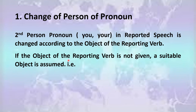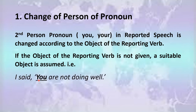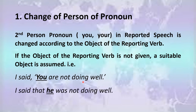But if the object of the reporting verb is not given, a suitable object is assumed. For example: I said, 'You are not doing well.' There is no object in the reporting speech, so while converting the second person pronoun you, we assume who is talking to whom. The indirect speech becomes: I said that he was not doing well. We omit the commas, write that, and convert you into he.